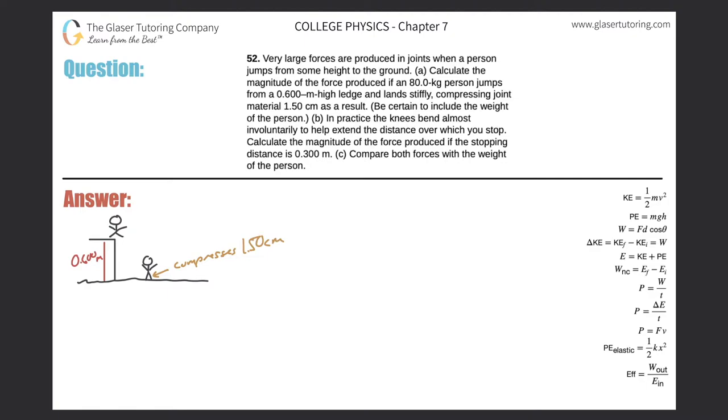Number 52. Very large forces are produced in joints when a person jumps from some height to the ground. Calculate the magnitude of the force produced if an 80 kilogram person jumps from a 0.6 meter high ledge and lands stiffly, compressing joint material 1.5 centimeters as a result.